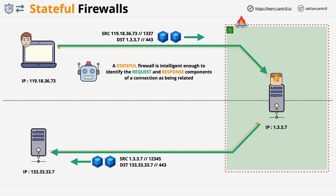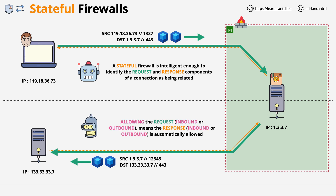With a stateful firewall, you'll generally only have to allow the request or not, and the response will be allowed or not automatically. This significantly reduces admin overhead and the chance for mistakes, because you just have to think in terms of the directionality and the IPs and ports of the request. In addition, you don't need to allow the full ephemeral port range, because the firewall can identify which port is being used and implicitly allow it as the response to an allowed request.